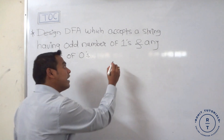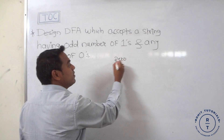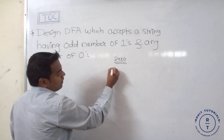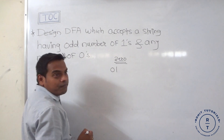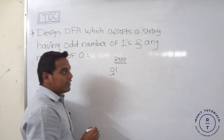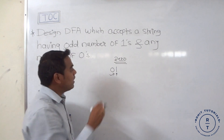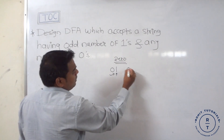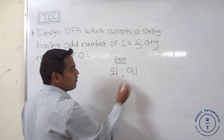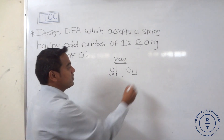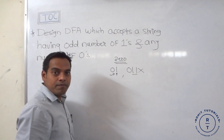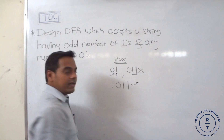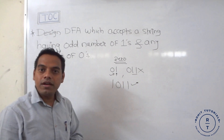Zero can appear zero times or any number of times. For example, the string '01' is accepted by the finite automata because it consists of an odd number of ones. The string '011' is not accepted because it has an even number of ones. The string '1011' is accepted because it has an odd number of ones.